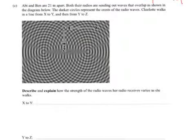Question C. C is an interesting one. We've got Abby and Ben 21 meters apart, both their radios setting up waves that overlap as shown in the diagram below. We're assuming at these central locations here is where Abby and Ben are, one at one place, one at the other. The darker circles represent the crest of the radio waves and Charlotte walks in a line from X to Y and then from Y to Z.